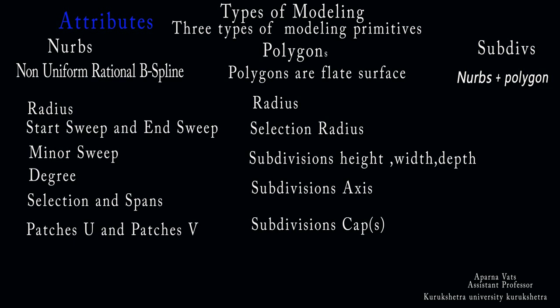Subdivision surfaces, or sub-divs, are a combination of both NURBS and polygons. Subdivision primitives come in six basic primitive shapes: sphere, cube, cylinder, cone, plane, and torus — similar to polygon primitives. Subdivision surfaces are good for high-resolution work. Unlike NURBS and polygon primitives, subdivision primitives have no attributes to adjust. Subdivision surfaces have two display modes: standard and polygon. Polygon mode behaves similar to polygon modeling.